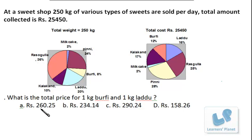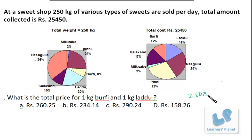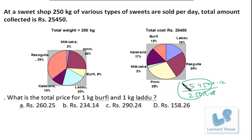What is the total price for 1 kg of burfi and 1 kg of laddu? The price of 1 kg of burfi — what is the contribution of burfi? It's 8% of 250, so 250 into 0.08. And the contribution of burfi here is 12%, so 25450 into 0.12.